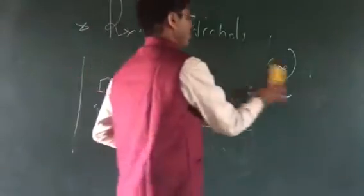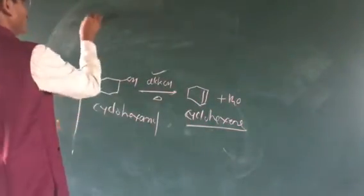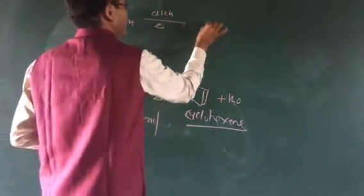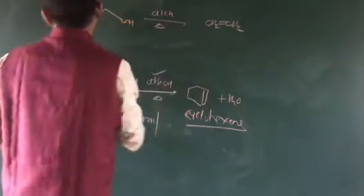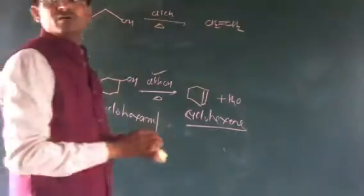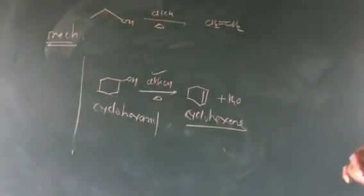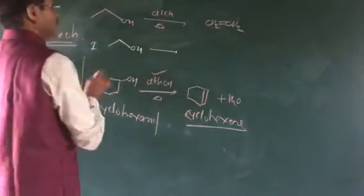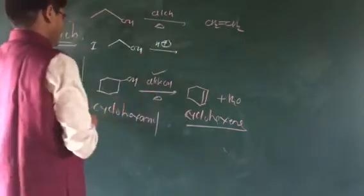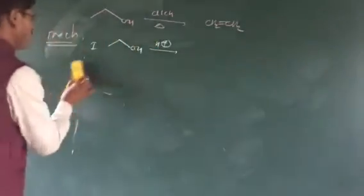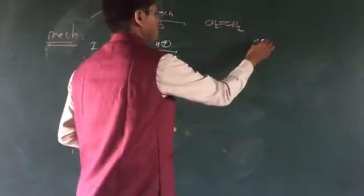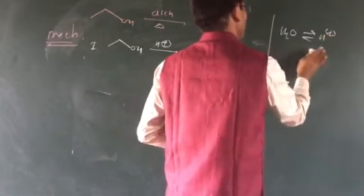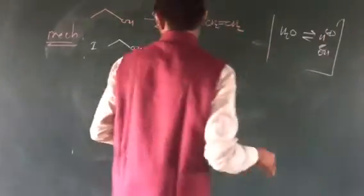Let us see the mechanism. The starting reactant molecule is ethyl alcohol. Ethyl alcohol reacts with alcoholic KOH. We need to see the mechanism. First step: ethanol is treated with alcoholic KOH under acidic condition H+. This H+ is coming from the water molecule - H2O dissociates to form H+ and OH-.